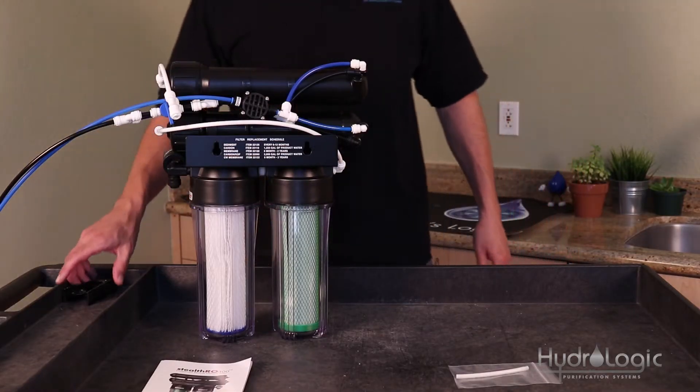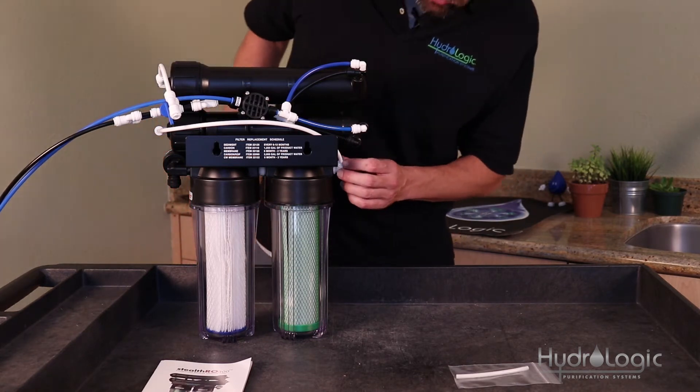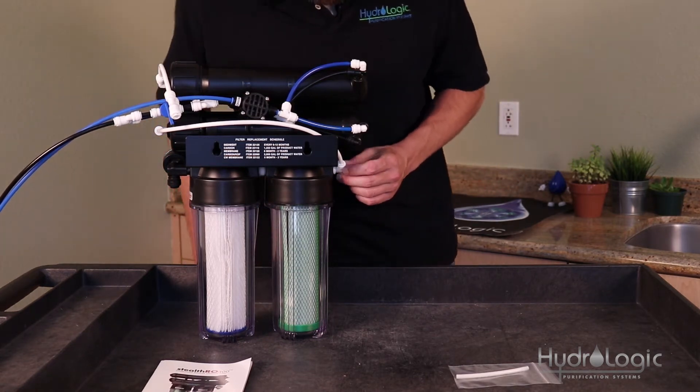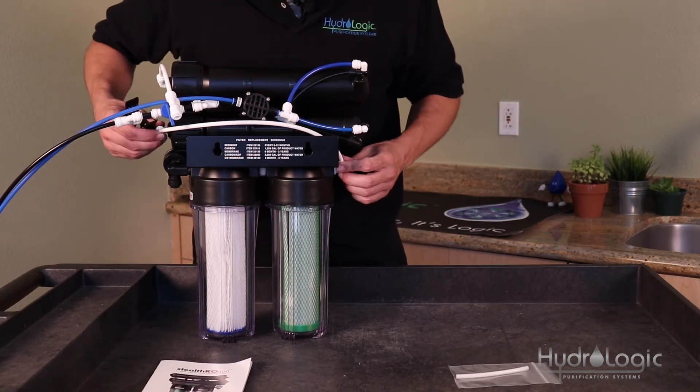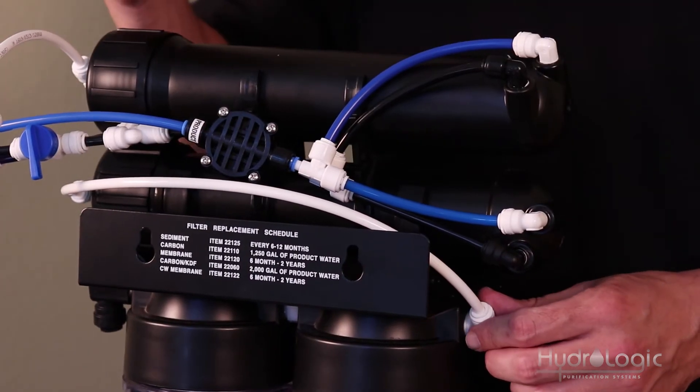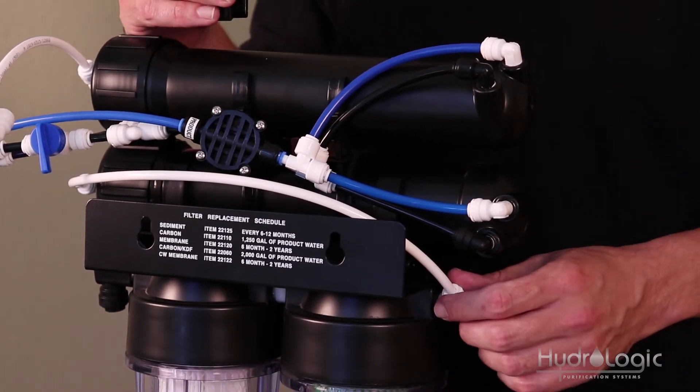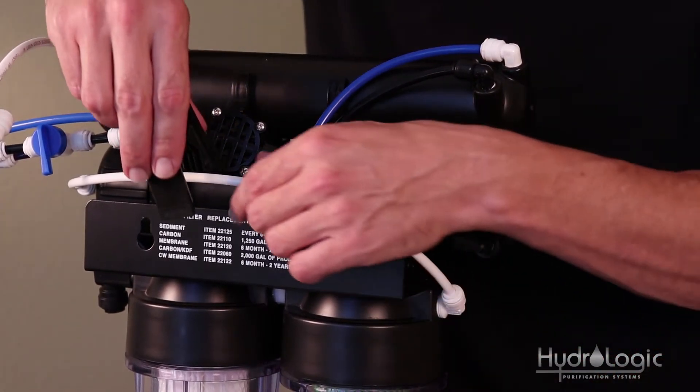Now, the next step is you want to take this quarter-inch white tubing that was on your existing system. If you'll see, this runs from the pre-carbon side up to this first membrane here. You want to take a pair of tubing snips or a sharp knife or a sharp pair of scissors, whatever you have, and cut that in half.